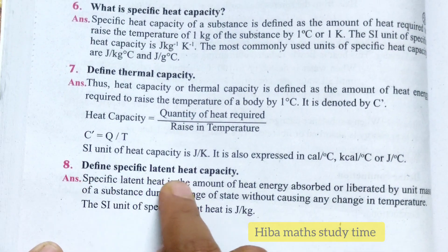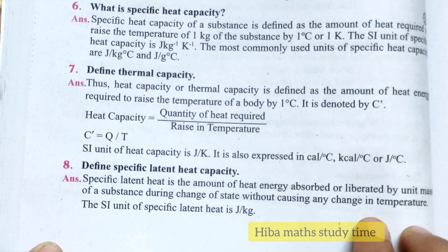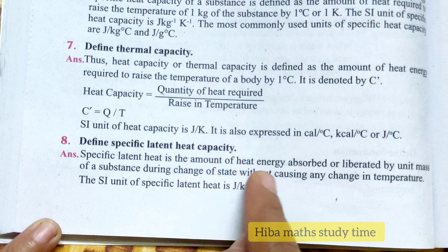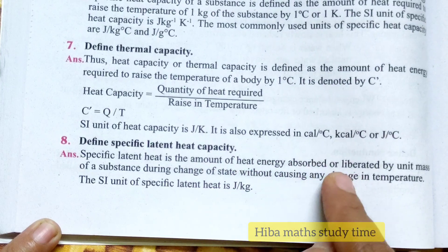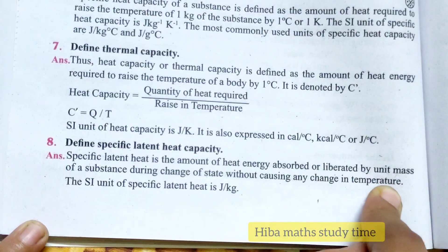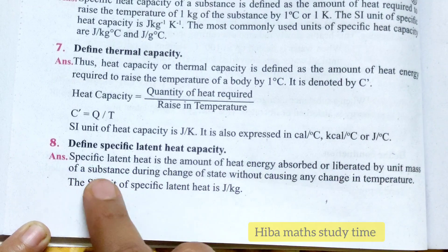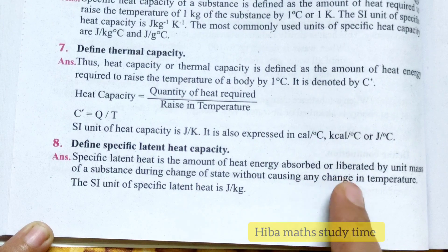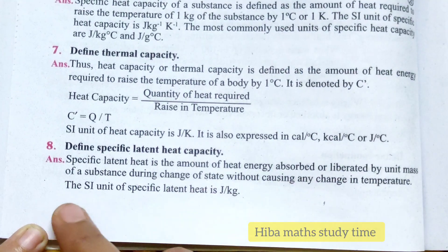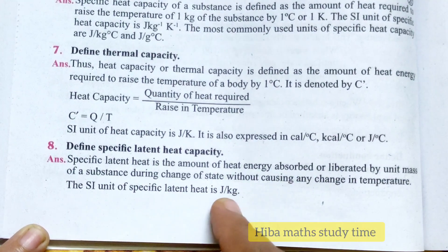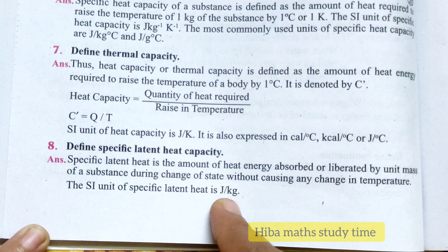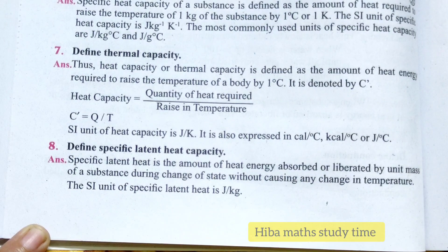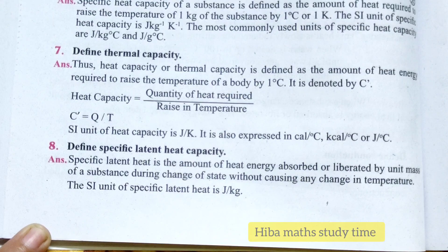Define specific latent heat capacity. Specific latent heat is the amount of heat energy absorbed or liberated by unit mass of a substance during a change of state without causing any change in temperature. The SI unit of specific latent heat is joule per kilogram. So 8 questions are covered. Thank you so much for watching.